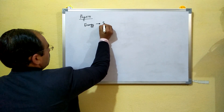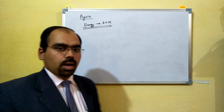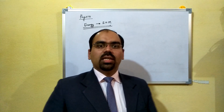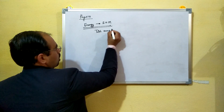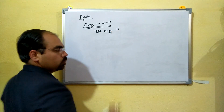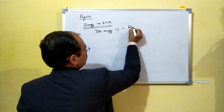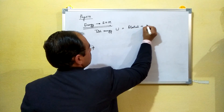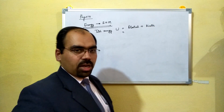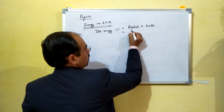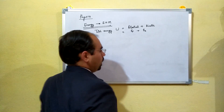Energy in simple harmonic motion, that is SHM. As we already know, the total energy U is the sum of potential energy plus kinetic energy. We are denoting potential energy as EP and kinetic energy as EK.